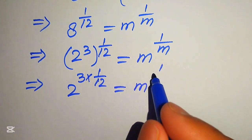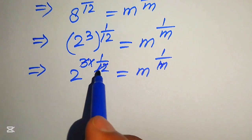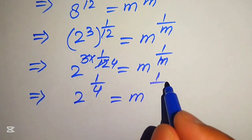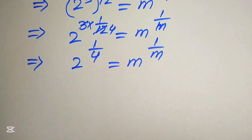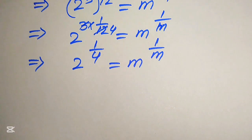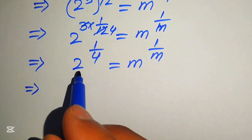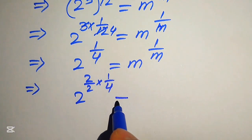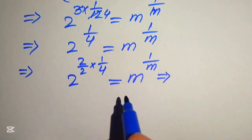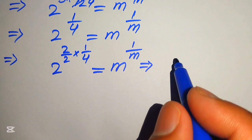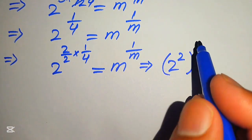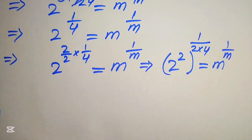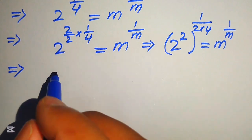This gives us 2 to the power of 3 over 12, which simplifies to 2 to the power of 1 over 4, equals m to the power of 1 over m. Now we need the left hand side exponent to be the reciprocal of its base. So we multiply and divide the exponent by 2, writing it as 2 to the power of 2 over 2 times 1 over 4. Moving the 2 inside gives 2 squared to the power of 1 over 2 times 4.